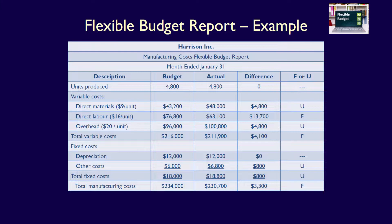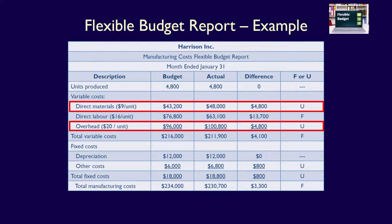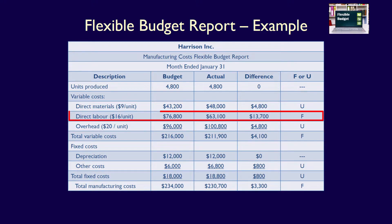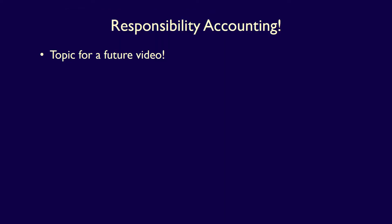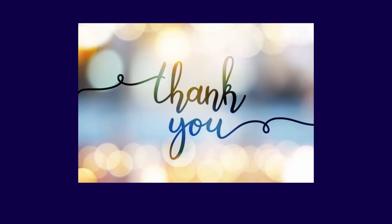What can upper management do with the results of this flexible budget? Because the units produced are identical between budget and actual, we can meaningfully compare variable costs. Management can investigate direct materials and overhead — speaking to individuals in charge of those areas to determine why they were not controlling costs. They can also recognize the direct labor manager for controlling costs well, perhaps with a bonus. The question of who upper management should speak to about variances leads into responsibility accounting, which ensures managers are evaluated on costs they actually control — but that's a topic for a future video. Thanks so much for watching!